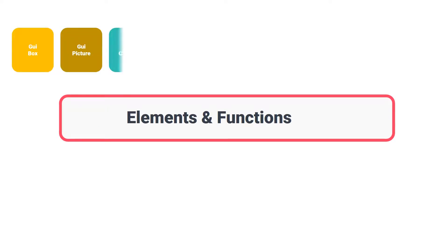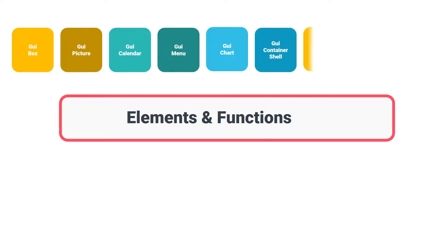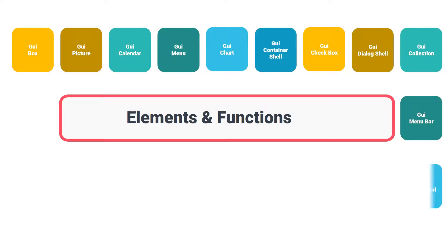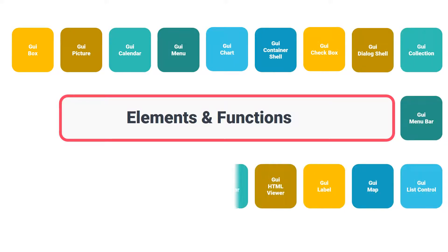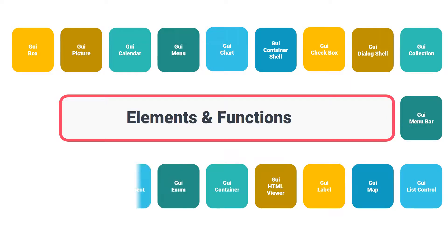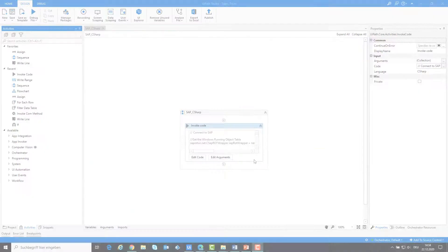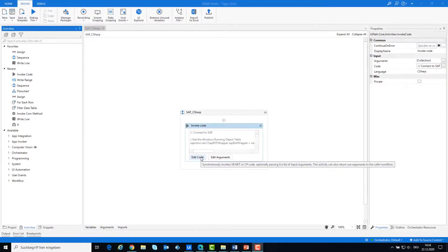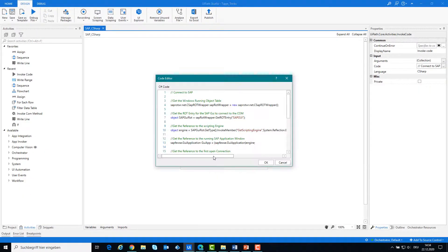These types and functions were only examples — there are many different types and functions. This can be seen directly in UiPath when you write the code. Now let's continue writing the code.